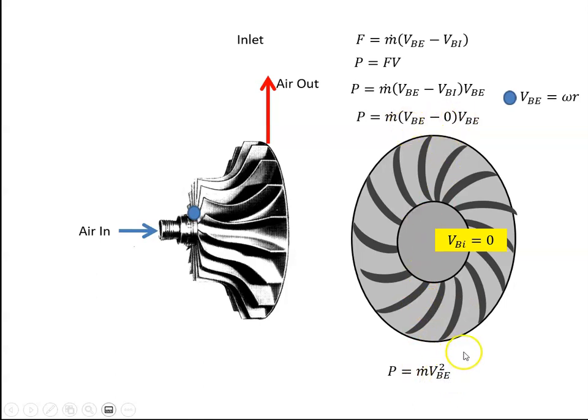Now that's assuming that it is 100% efficient, that the air leaving here is at that velocity. It won't be, so we have this efficiency factor called slip. That's an efficiency factor, so the actual power required to turn the centrifugal compressor is this value here.